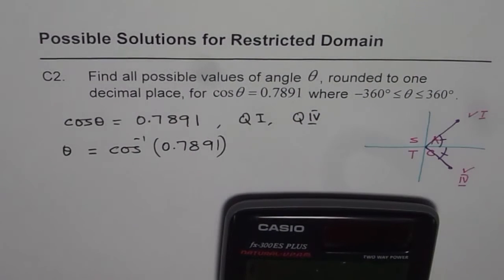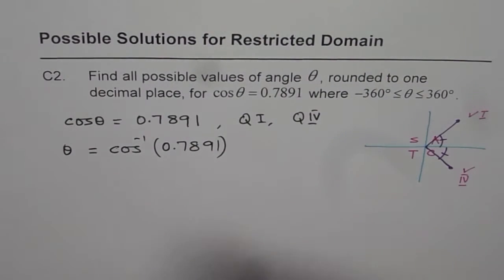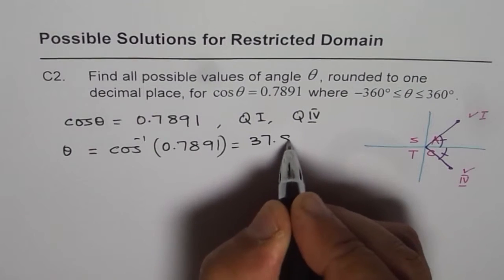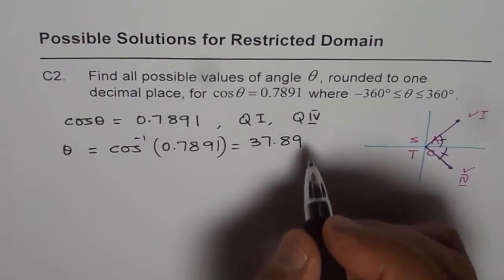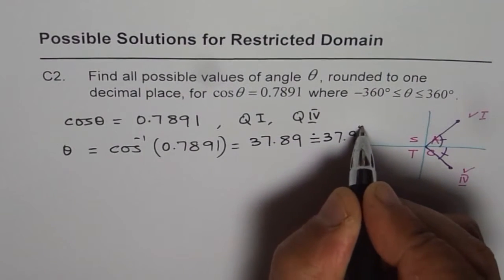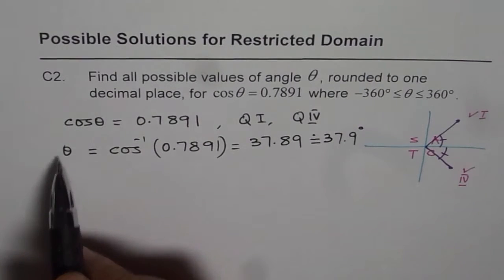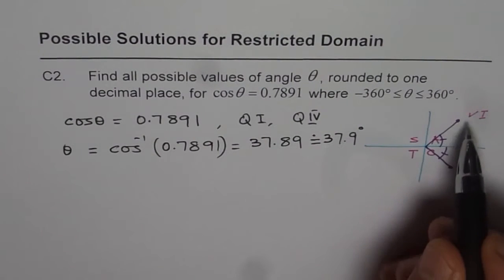So it is second function, shift cos inverse, 0.7891. Bracket close, equals to 37.8985. We have to round to one decimal place. We can round this to 37.9 degrees. So that is the value of theta. And this value of theta corresponds to quadrant 1.